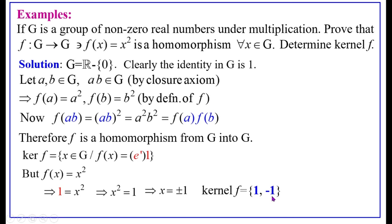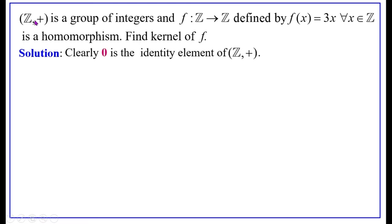Thus 1 and -1 are the kernel of the function F, which is a homomorphism from G to G, where G is the group of non-zero real numbers under multiplication. Next: (Z, +) is a group of integers and F from Z to Z is defined by F(X) equals 3X for all X in Z, which is a homomorphism. Find the kernel of F.